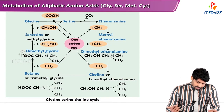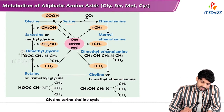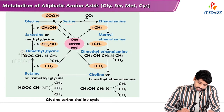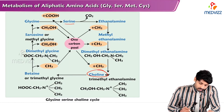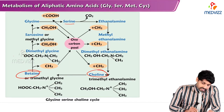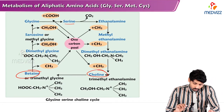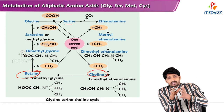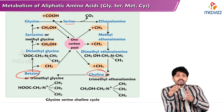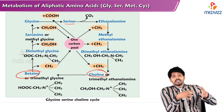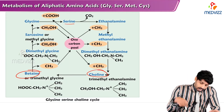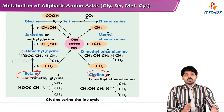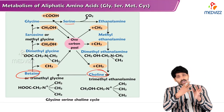In the flow chart: glycine forms serine, serine forms ethanolamine, then methyl-ethanolamine, dimethyl-ethanolamine, finally choline, and choline forms acetylcholine and betaine. From betaine: dimethylglycine, sarcosine, and finally back to glycine. So it is a glycine-serine-choline cycle, and they all contribute to the one-carbon pool.